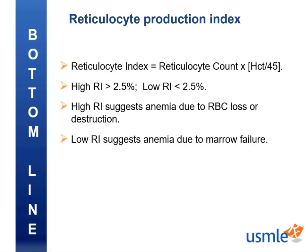Let's wrap up. A simple reticulocyte count won't cut it — we need to calculate the reticulocyte index using the formula: reticulocyte count × (patient's hematocrit / 45). A high reticulocyte index is over 2.5% and suggests anemia due to red blood cell loss or destruction. A low reticulocyte index is less than 2.5% and suggests anemia due to bone marrow failure.